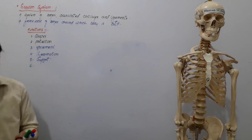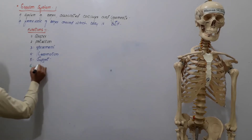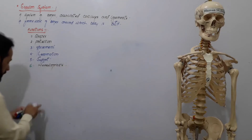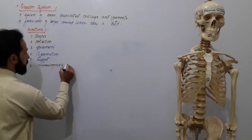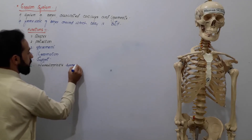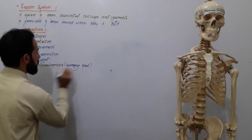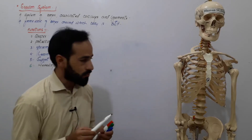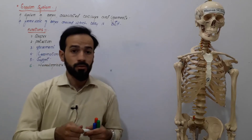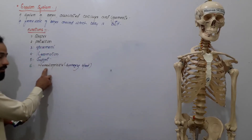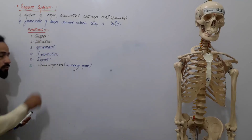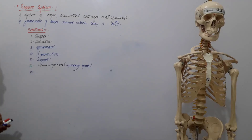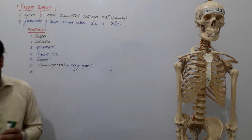The next important function of the skeletal system is hematopoiesis — the synthesis of blood. Inside certain bones, you have bone marrow, and that bone marrow is responsible for producing blood. So the skeletal system is responsible for synthesizing blood.